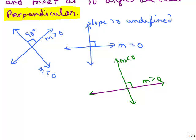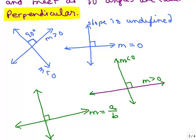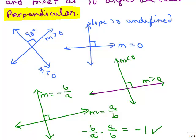So if the slope of one line is A over B, the slope of the perpendicular line is going to be the opposite sign — so if this is positive, the perpendicular will be negative — and it's also the reciprocal. So if one line has a negative slope, the other will be positive and the fractions are reciprocals of each other. What happens when you multiply slopes that are perpendicular to each other? If you take the slope of one line, which is negative B over A, and multiply it by A over B, you get negative 1. That's how you can tell if two lines are perpendicular: their slopes multiply to negative 1.